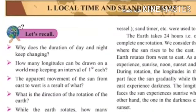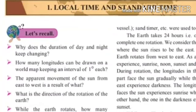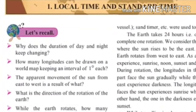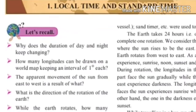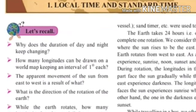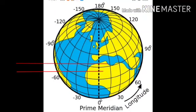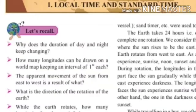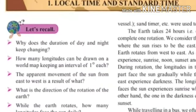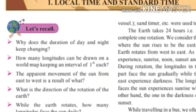How many longitudes can be drawn on a world map keeping an interval of 1 degree each? The answer is 360 longitudes can be drawn on a world map keeping an interval of 1 degree each.